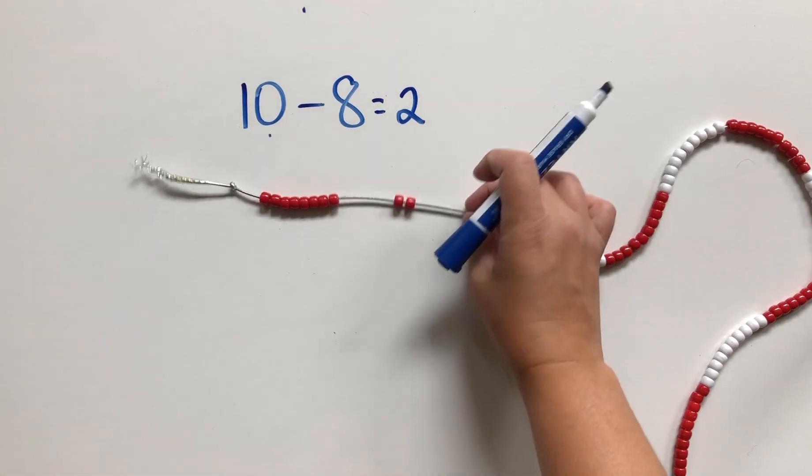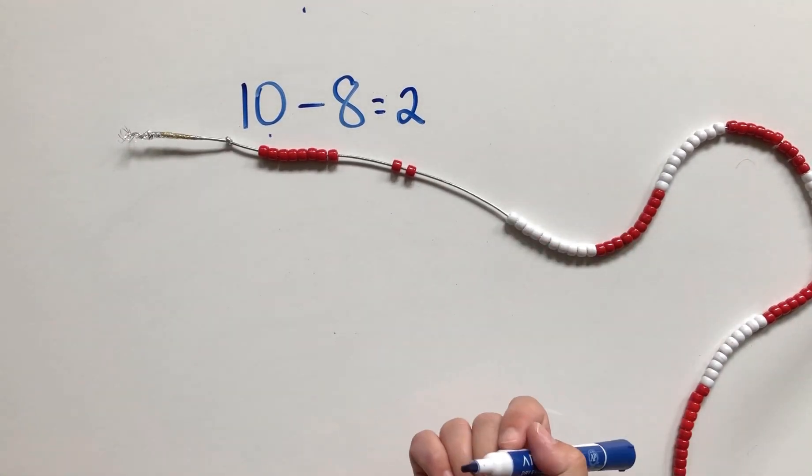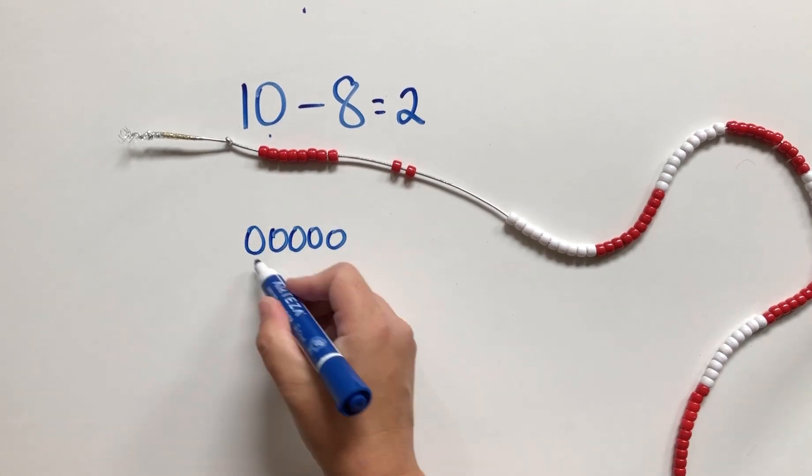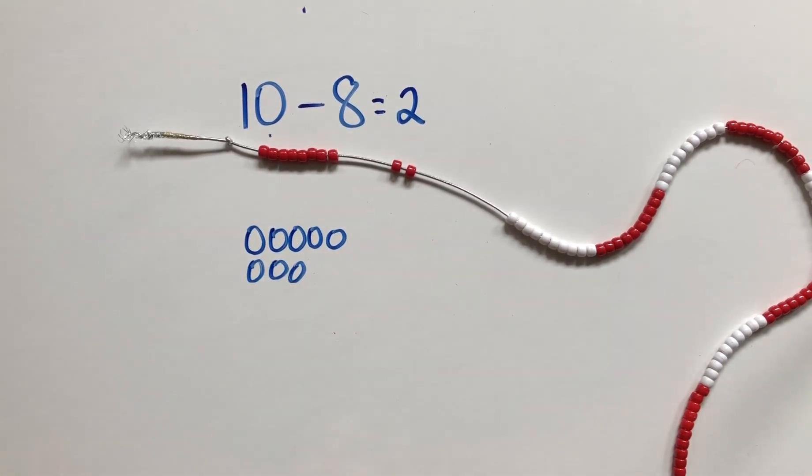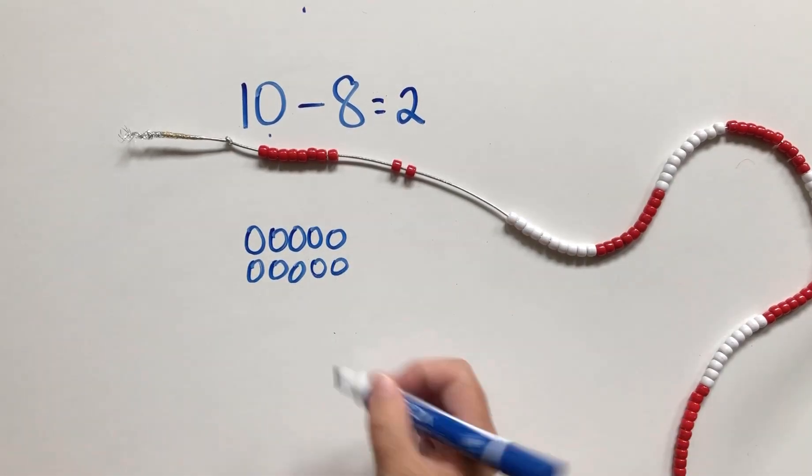When we want our students to work in the representational phase, how could we do this? Well, we could start out by drawing 8 of something. We're starting with 8, and how many more to get to 10? Two more. We could do that.